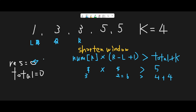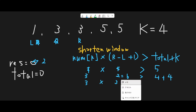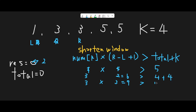Result is updated to 2. Move right pointer to next. Now right pointer is at index 2, value 3: 3 × 3 = 9. Is 9 greater than actual total 7 + k 4 = 11? No. In that case result should be updated to 3 because we can change all numbers to 3 in the current range. Move right pointer to next.